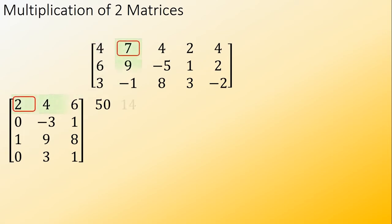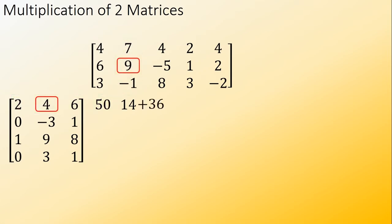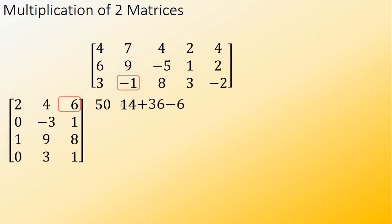Next: 2 times 7 equals 14, 4 times 9 equals 36, 6 times negative 1 equals negative 6, and then adding them equals 44.